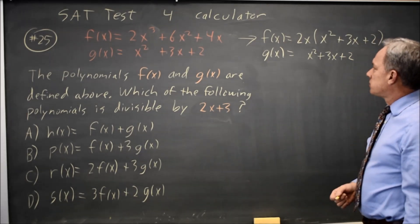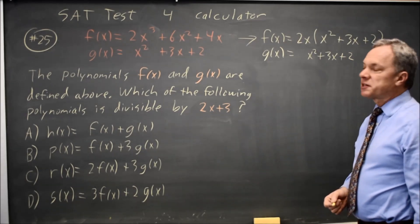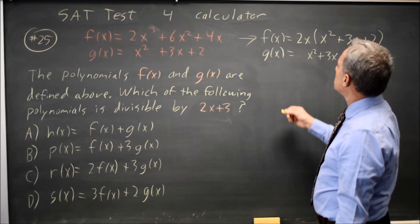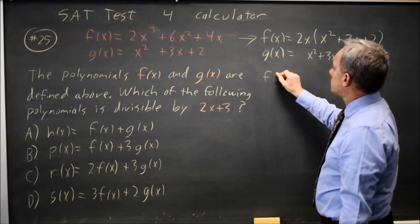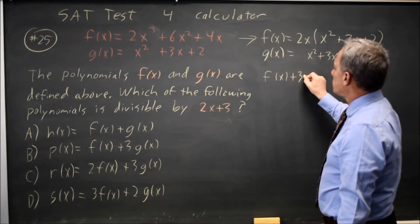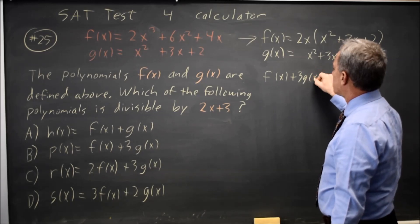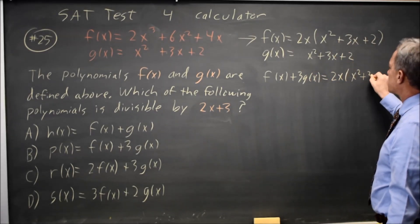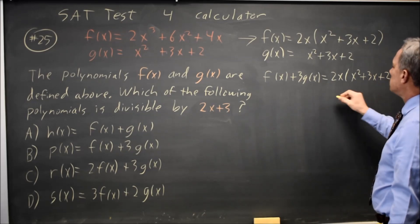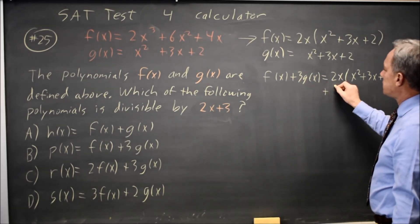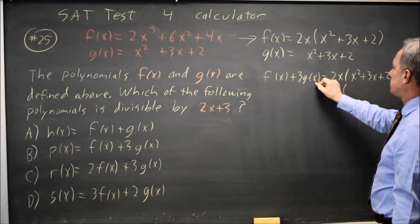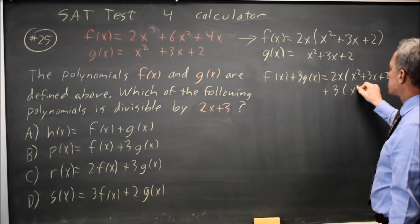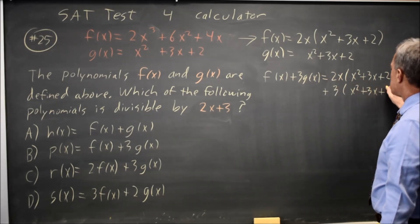If I want it to be divisible by 2x plus 3, it looks like f plus 3g will be 2x times x squared plus 3x plus 2, and then 3g is 3 times x squared plus 3x plus 2.